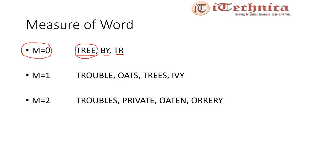Now consider examples where m equals one. The word trouble contains consonants t and r, then vowel u followed by consonant b — one VC combination — so m equals one. Similarly, for the word oats, at is the vowel-consonant combination, giving one VC sequence, so m equals one for these words.